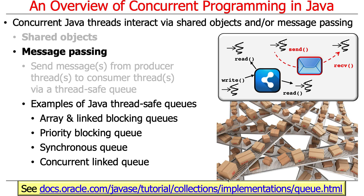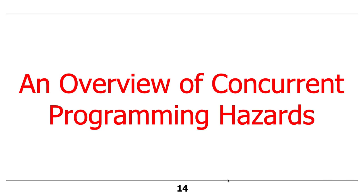In practice, a lot of this is hidden behind higher-level programming frameworks, which we'll talk about later. So that's a quick overview of the two ways of coordinating threads: shared objects using synchronizers, and message passing using buffers that also use synchronizers internally with rules about when you can put things in and take things out.